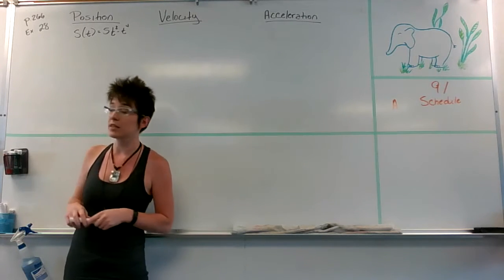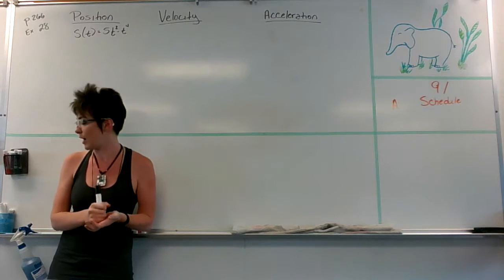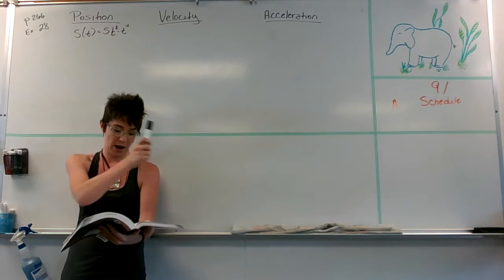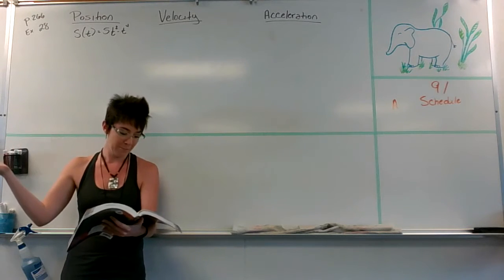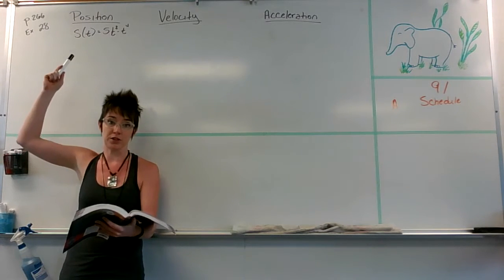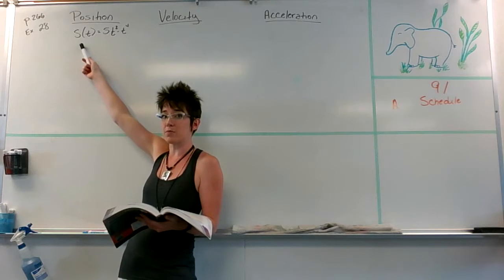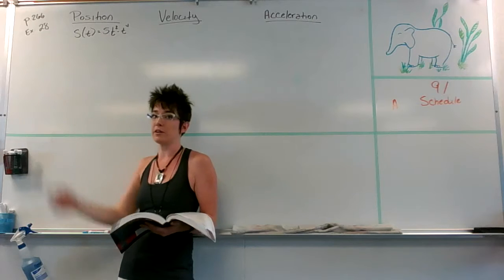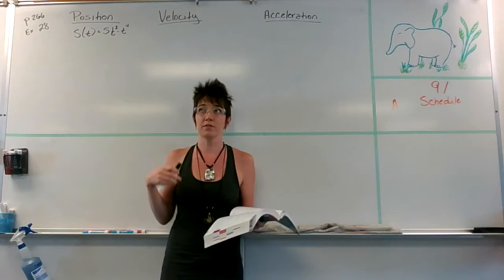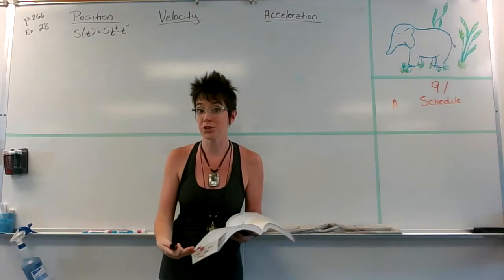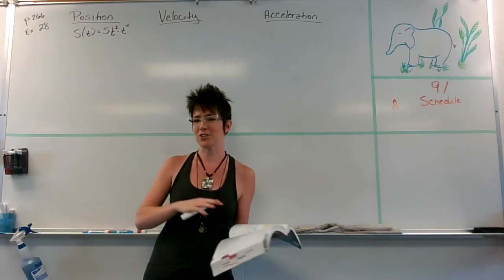I'm working on page 266, example 28. A particle is moving in a horizontal line so that its position from a fixed point after t seconds, where t is positive or greater than or equal to zero, is given by this equation. In kinematics and physics, position functions are represented by s — s is the position in relation to time t. Velocity is the derivative of that position function, because derivatives or rates of change tell you how quickly your position is changing, and that's velocity. Speed is not direction sensitive, but velocity is.